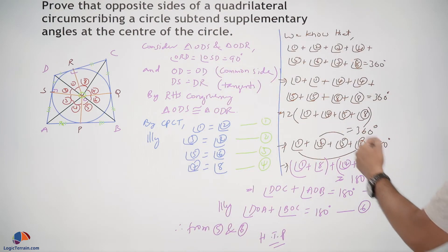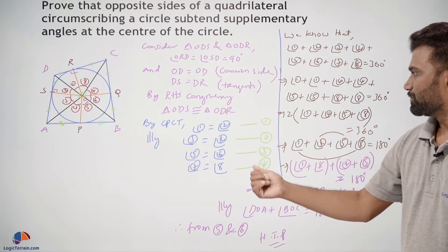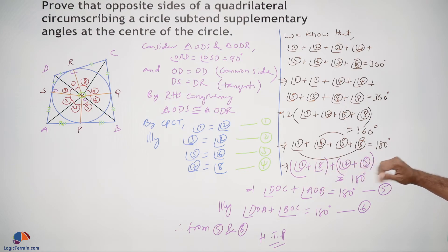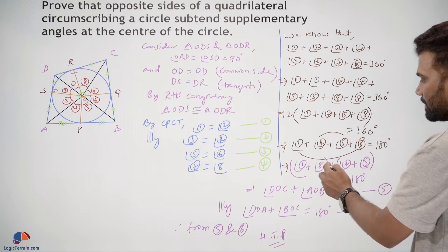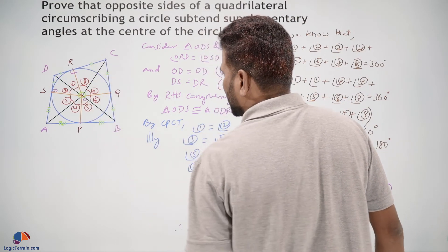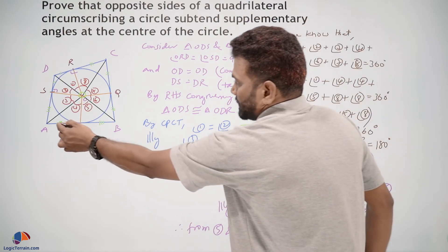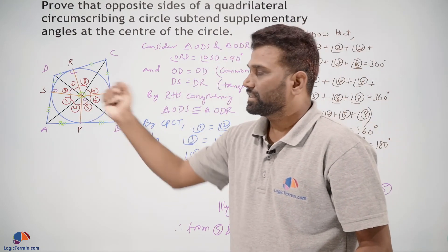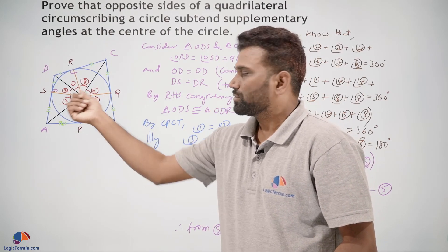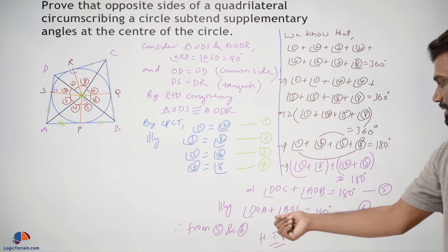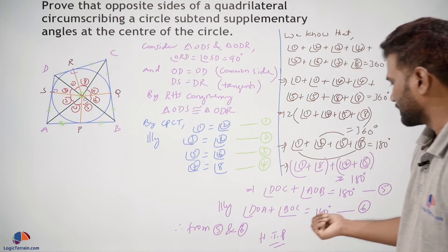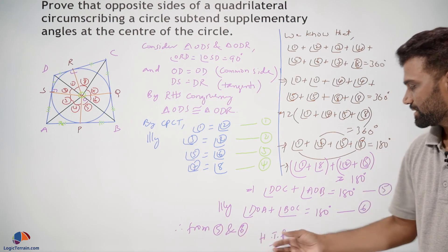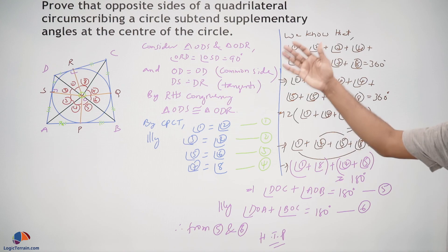We know that the sum of all eight angles together gives 360 degrees because they form a complete circle. Using the equal-angle relations from equations 1 through 4, we manipulated and obtained that angle 1 plus angle 8 plus angle 4 plus angle 5 equals 180 degrees. Here angle 1 plus angle 8 is angle DOC, and angle 4 plus angle 5 is angle AOB, and their sum is 180 degrees — they are supplementary at the center. The remaining two angles must also sum to 180 degrees. Similarly, angle DOA plus angle BOC equals 180 degrees, completing the required proof.